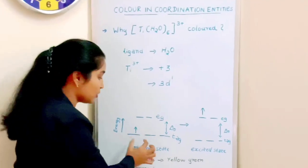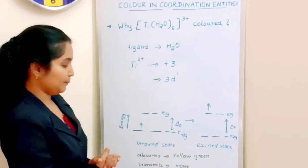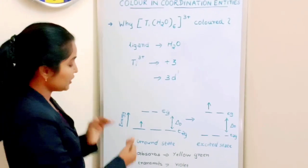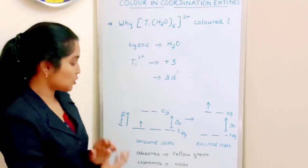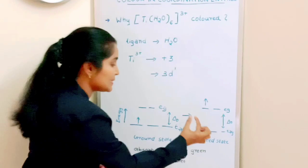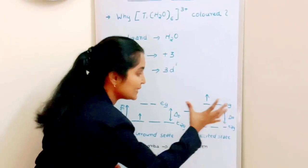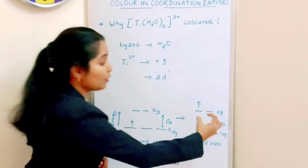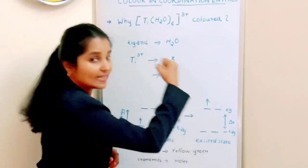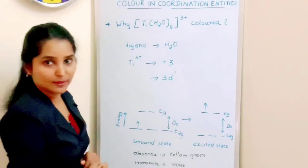When moving to the excited state or when they absorb energy, this electron will jump from the lower energy state (T2G level) to the higher EG level by acquiring an energy equal to its delta O or delta naught value.